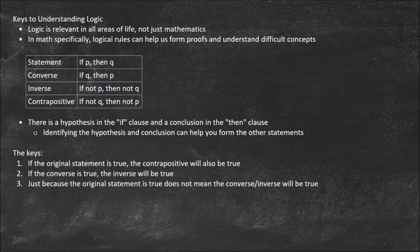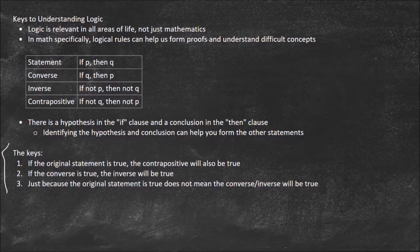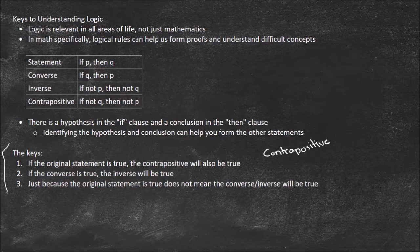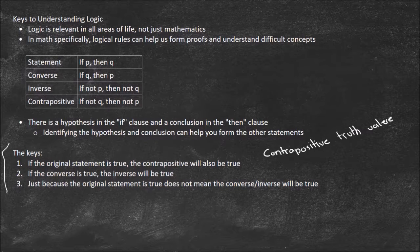The first key is: if the original statement is true, the contrapositive will also be true. So the contrapositive and the original statement have the same truth value. If one is false, both are false. If one is true, both are true. Contrapositive truth value equals the original statement's truth value.